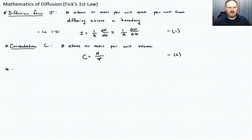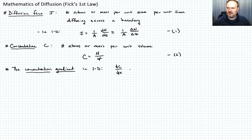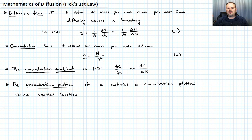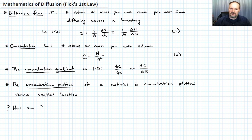A term we're going to encounter very soon is the concentration gradient. In 1D, it's just ∂C/∂x, or if there's no time dependence, dC/dx. And finally, the concentration profile is just how the concentration varies with space — plotting concentration versus spatial location. Now I want to pose a question: how are the flux and the concentration related?